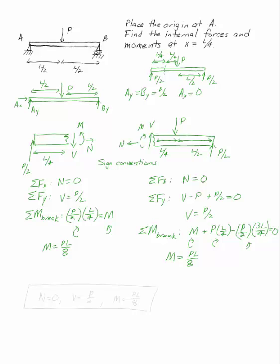So our answer is N equals 0, V equals P over 2, and M is PL over 8. I don't have to give a direction for these forces because it's understood by the sign conventions.